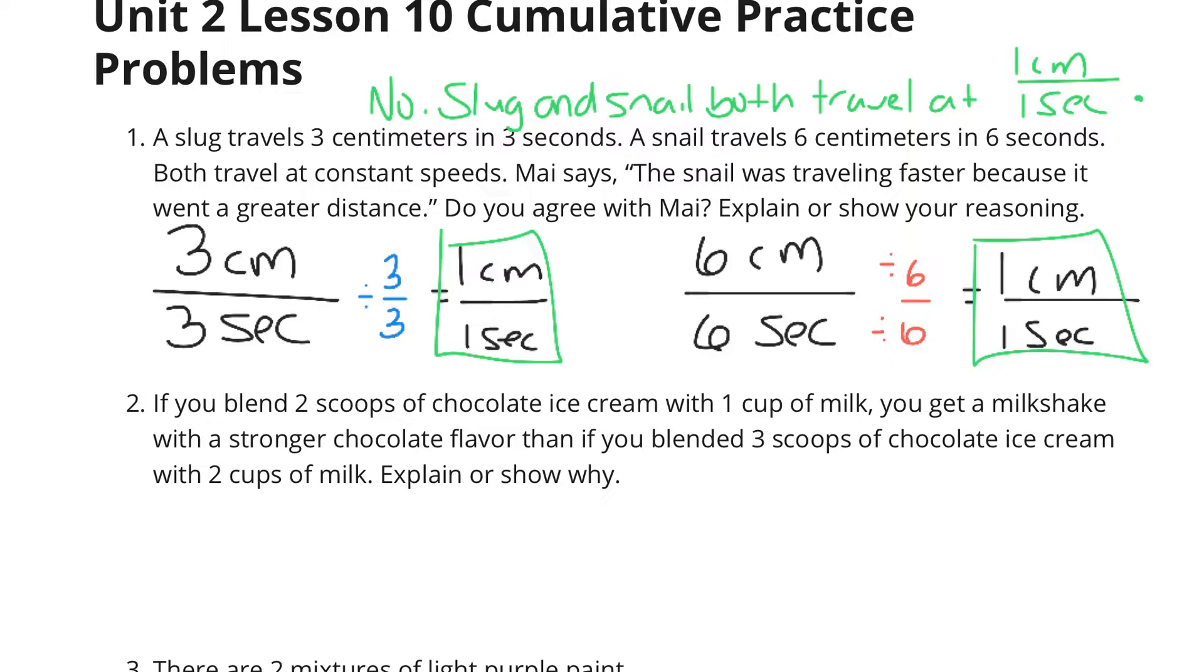If you blend 2 scoops of chocolate ice cream with 1 cup of milk, you get a milkshake with a stronger chocolate flavor than if you blended 3 scoops of chocolate ice cream with 2 cups of milk. Explain or show why. Well, if we start off with this 2 scoops of ice cream with 1 cup of milk, and we compare that then to 3 scoops of ice cream with 2 cups of milk.